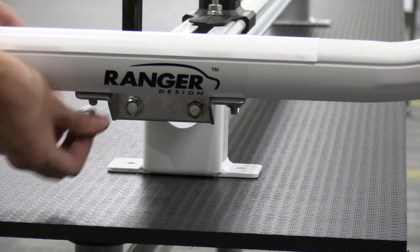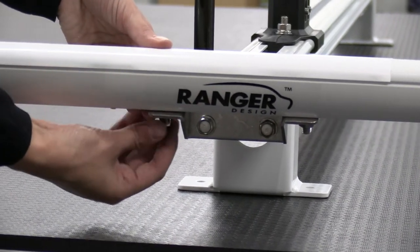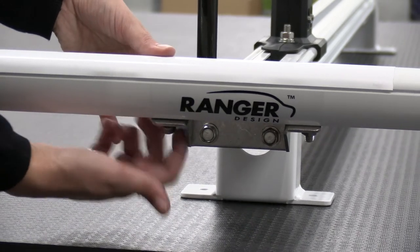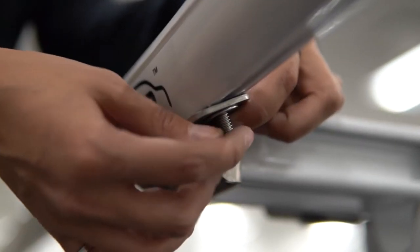Attach the ski to the ski mount using a carriage bolt, flat washer, lock washer, and hex nut. Repeat this step so that the ski is bolted to both crossbars.